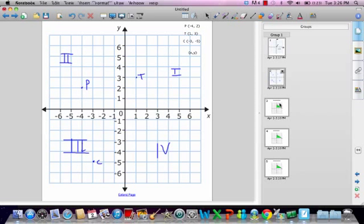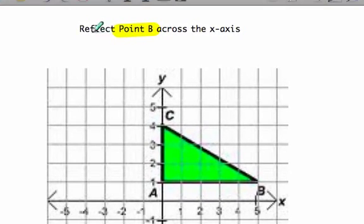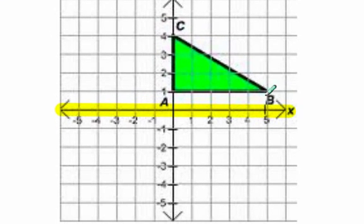One more thing we're going to look at is reflections. So the directions here say reflect point B across the x-axis. It's important to understand that the word reflect just means we're going to flip it over and we're going to flip it over the x-axis. So just to highlight, the x-axis, of course, that's the horizontal one. So make sure you put it over the horizontal one and not over the vertical one by mistake.